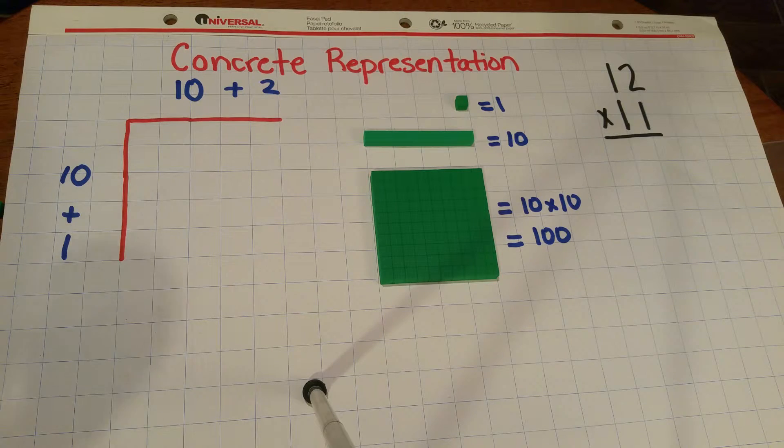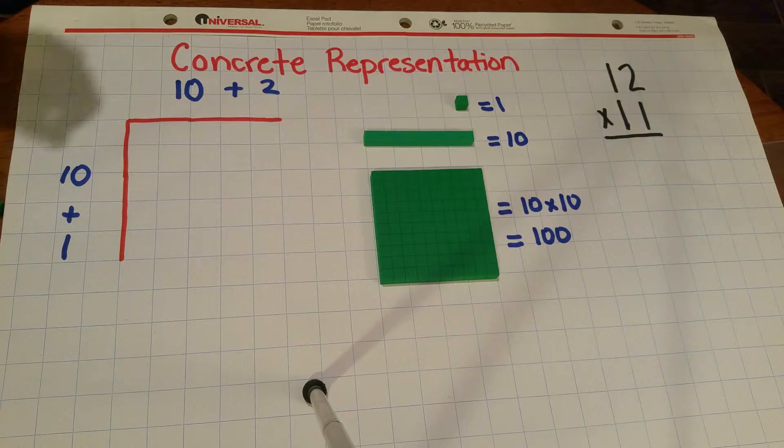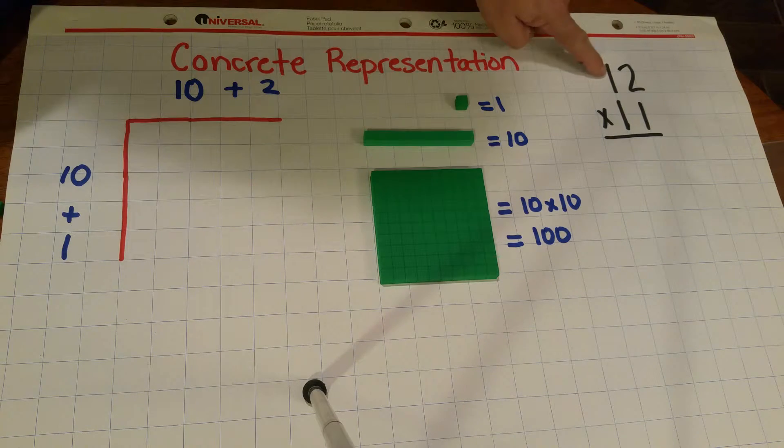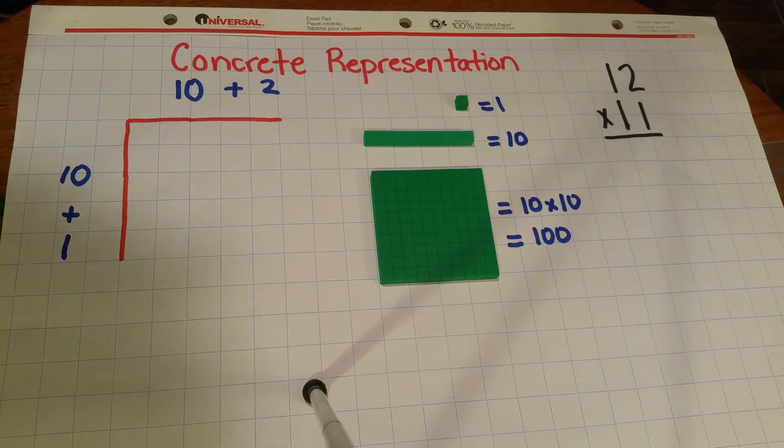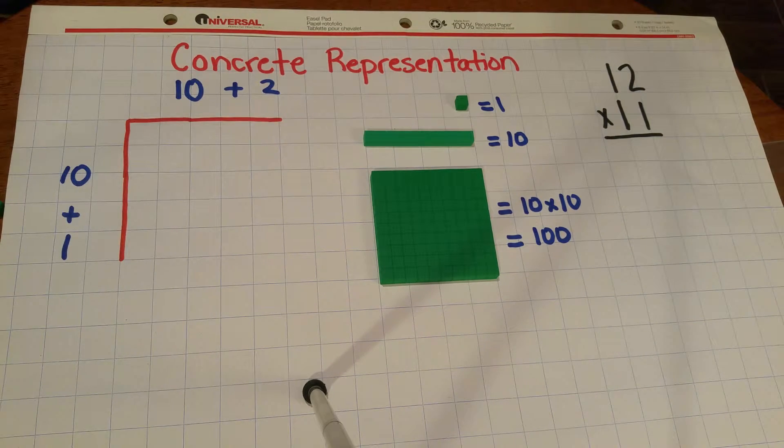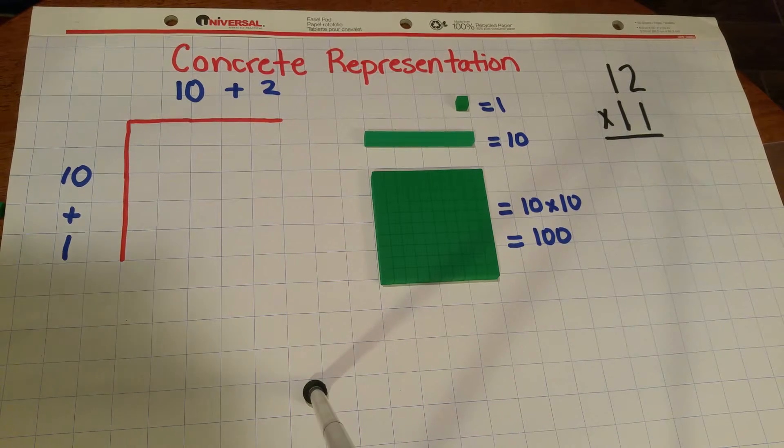All right, so once you have those defined, I'm going to do the multiplication problem that is 11 times 12. That is the simplest non-trivial two-digit multiplication problem.